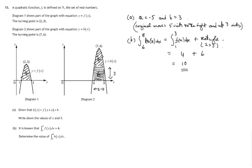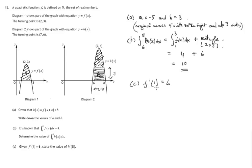Finally, let's come on to part c. We're told that f dashed of 1 is equal to 6. We interpret that as f dashed being the gradient when x is 1 — so the gradient at that point on the curve f of x is equal to 6.